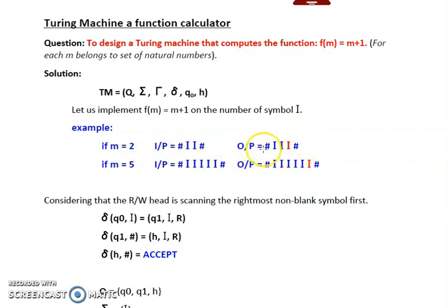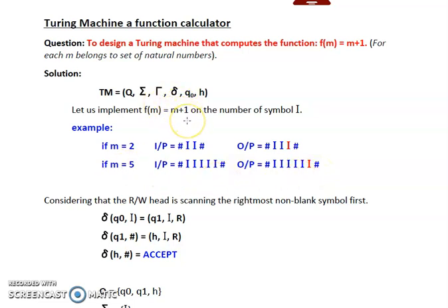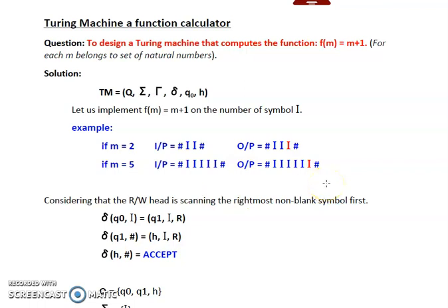So the required output is 3 i's. Similarly if we are providing m equal to 5, that means in the input we are providing 5 i's. In the output it will produce 6 i's, because this function generates one more than the number of inputs provided. So if input is 2i output is 3i, if input is 5i output is 6i, if input is 3i output is 4i, and if 6i are provided then output should be 7i.